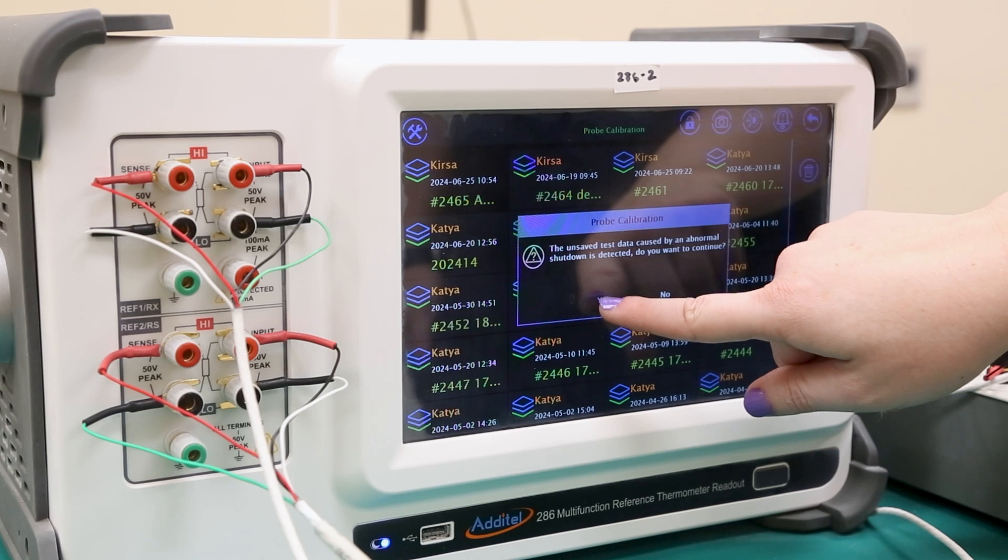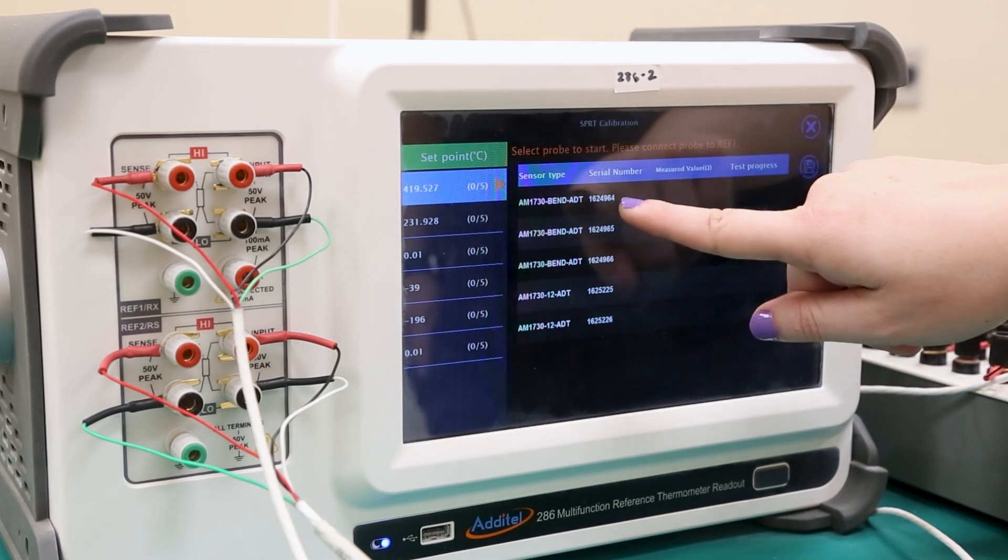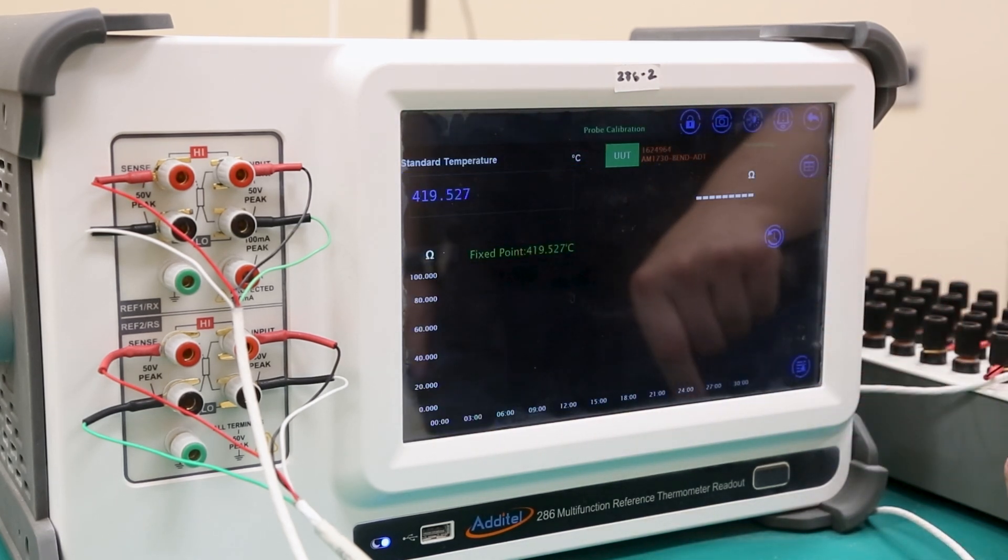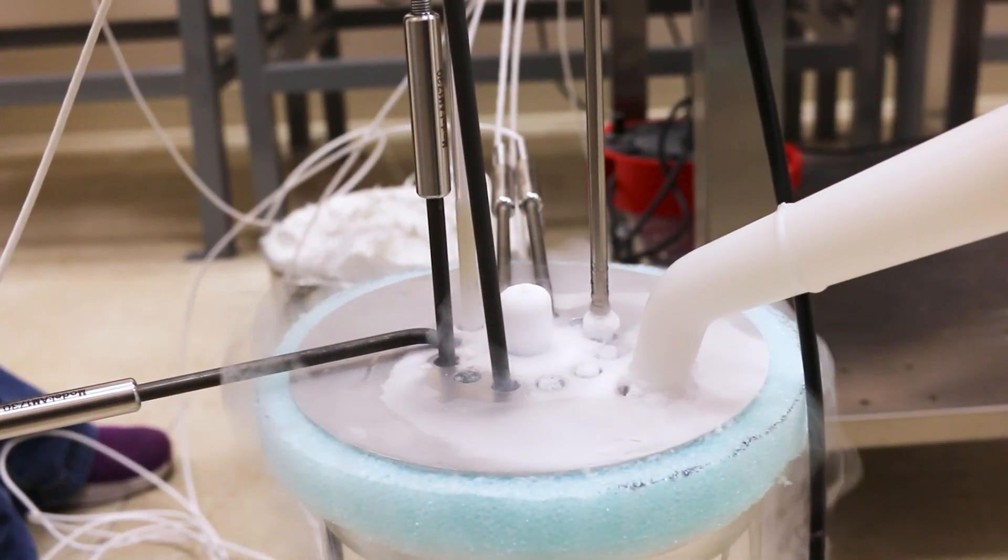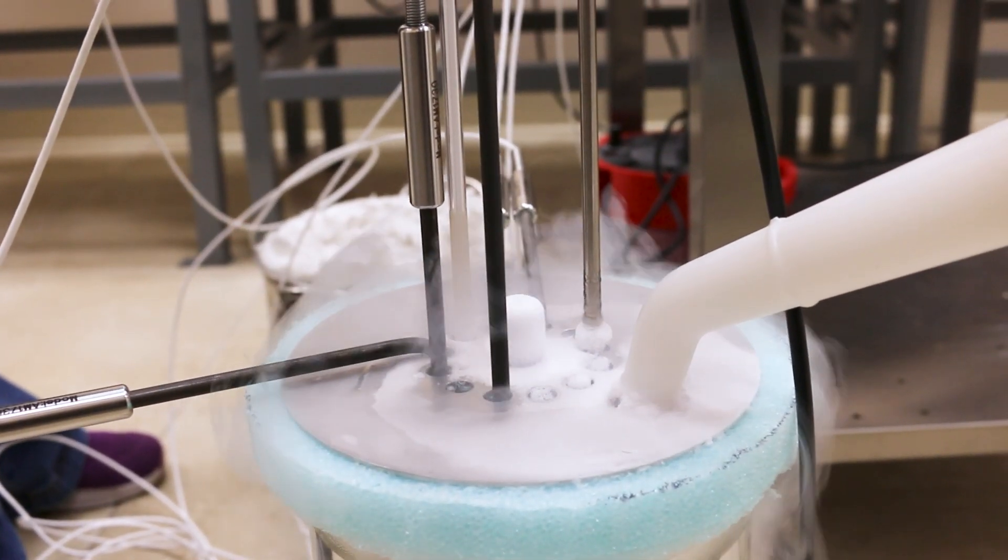This video will take a look at how the Aditel 286 can be used as both a temperature bridge and measurement device to perform a repeatable fixed-point calibration of five different temperature probes with as little user input as possible.